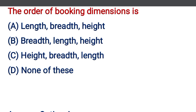The order of booking dimensions is — option A: length, breadth, height; option B: breadth, length, height; option C: height, breadth, length; option D: none of the above. The correct answer is option A, length, breadth, height.